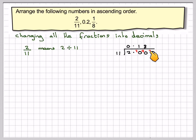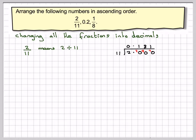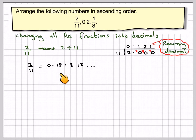Now we can see what's going to happen here because we've already had remainder 2, and we've got it again. So we're just going to get 1, 8, 1, 8, 1, 8 repeating. Therefore we've got a recurring decimal. So 2 elevenths is equal to 0.181818 and that carries on forever. So 2 elevenths is 0.1-dot 8-dot — a recurring decimal.